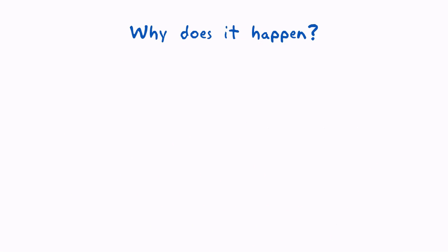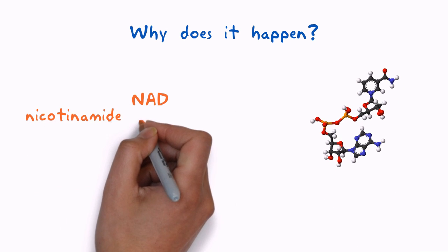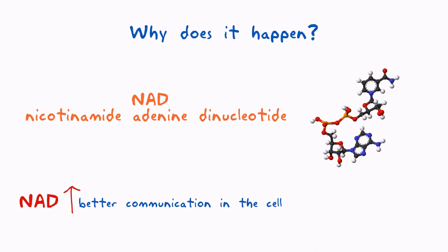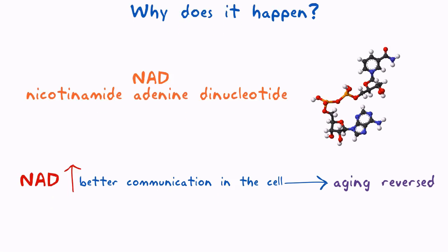Responsible for this communication breakdown is a decline of the chemical NAD. This chemical reduces in the body as we age. By increasing amounts of a compound used by the cell to produce NAD, the researchers found that they could quickly repair mitochondrial function, and that led to the radical reversal in the aging of the mice.